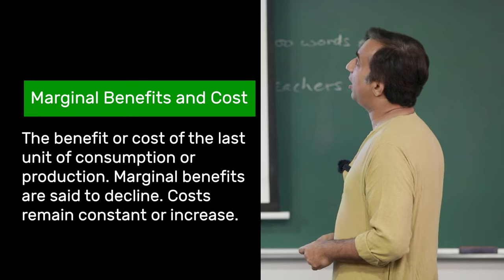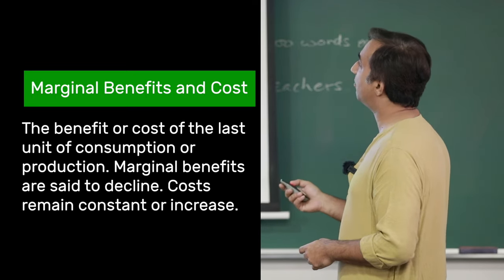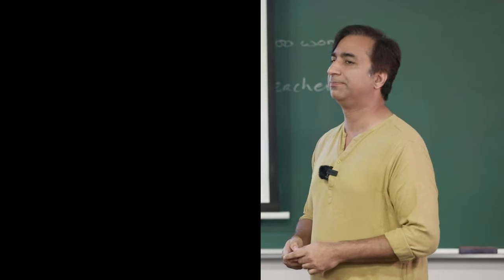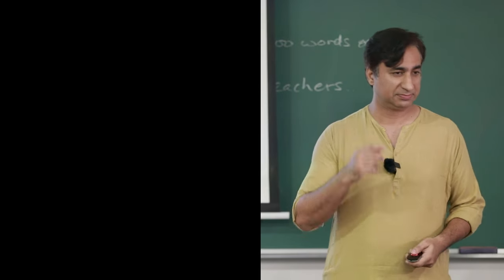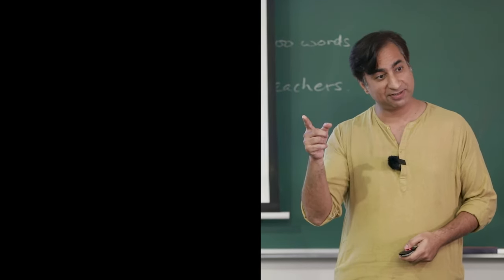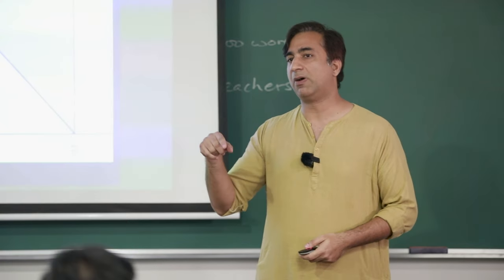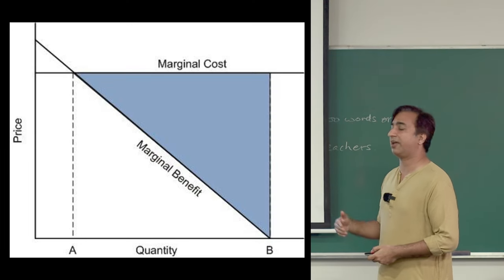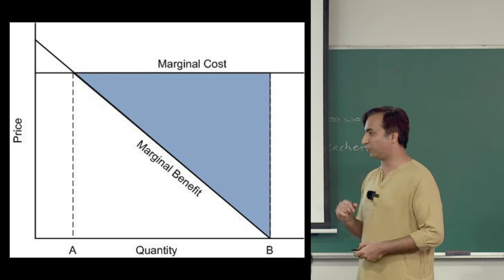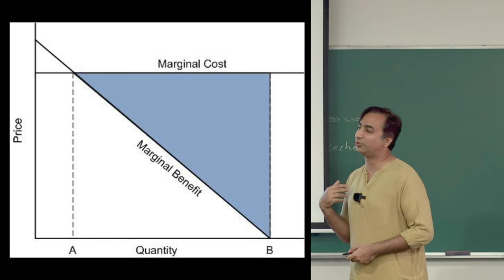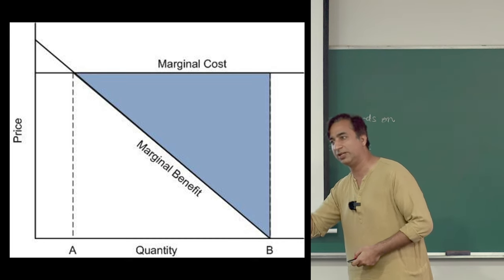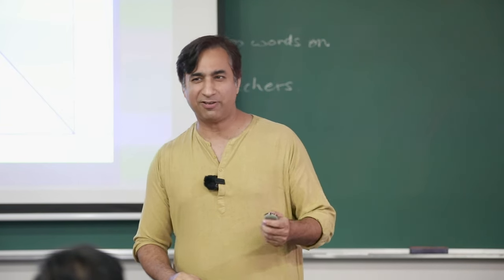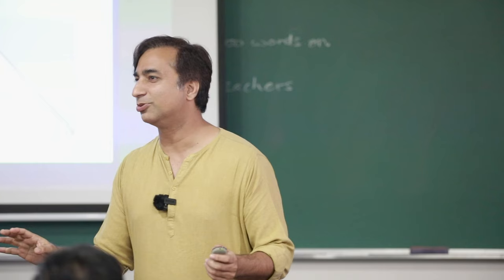Marginal benefits decline - 'marginal' means the next unit, the last unit. The idea is that every time you have something, the next unit gives you slightly less utility. For example, you just took a sip of water; that sip gives you greater utility than the next sip, which will give you slightly less. But is that really true? Economics takes it as given, but is it always the case?